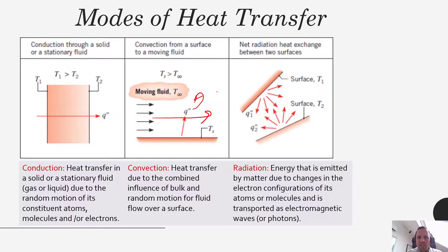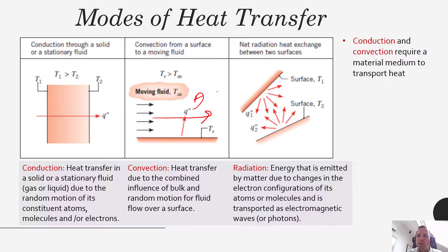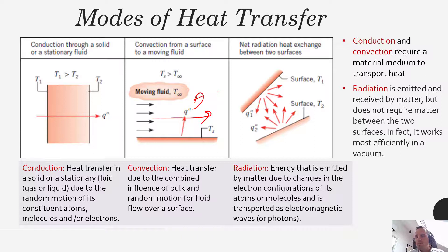The last mode is radiation — energy emitted by matter due to changes in the electron configurations of its atoms or molecules, transported as electromagnetic waves or photons. With radiation, heat transfer can happen from one surface to another with a complete vacuum in between; there could be a fluid in between, but it's not required. Conduction and convection require a material medium to transport heat, whereas radiation is emitted and received by matter without needing any actual matter in between — it actually works most efficiently in a vacuum.